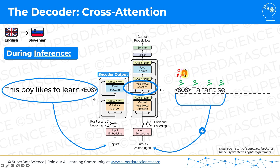We're going to create QKV vectors, but actually not QKV — we only need to create the Q vector. We'll do that for every single word in our so-far translation. As we did before when talking about self-attention, we're going to pick one word as an example — for instance, 'fant,' which means boy. In reality, this whole same process happens for every single one of these words in this step four.